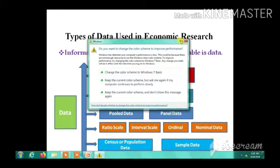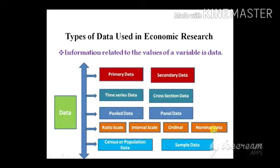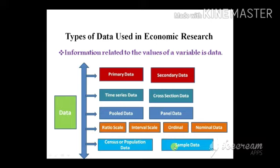Nominal data cannot be measured numerically; it is qualitative data — for example, religion or gender (male or female). We generally use binary numbers, 1 or 0, to identify nominal variables, which are also known as dummy variables. Census or population data considers all households within a particular study, while sample data is a part or subset of the population.